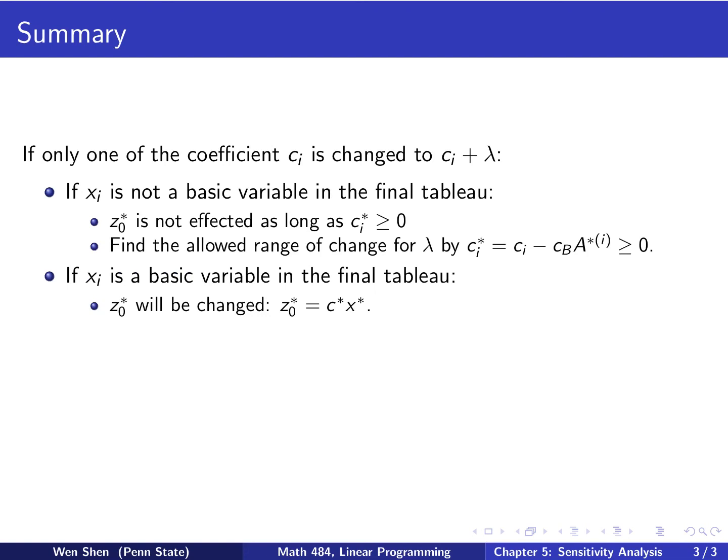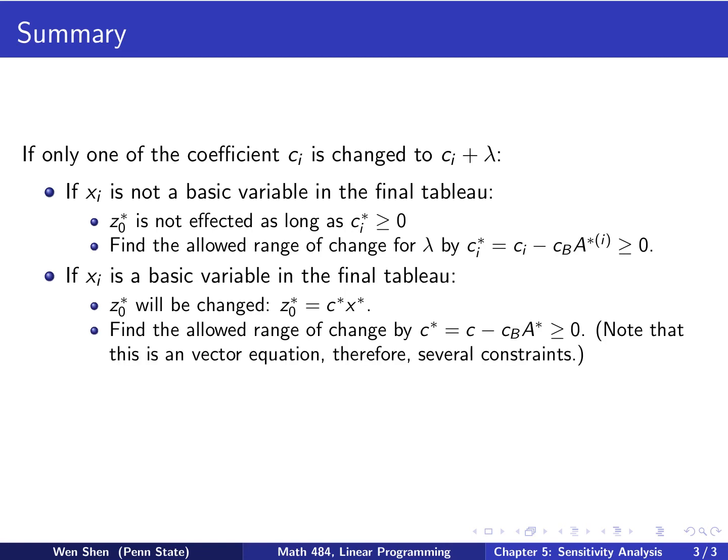And the second case here, if Xi is a basic variable in the final tableau, then there's a different procedure. Then we know the optimal value will be changed, and the optimal value will be C star times X star. And then how to find C star? Well, we also would require C star to be positive, non-negative, for this to remain optimal. So we can find the allowed range of change by C star, again, computed by this expression to be bigger than zero. From the example, we know that we have to pay attention that here we actually have a system of inequalities. There are several constraints that occur here, and they all need to be satisfied. You need to find the intersection of all these inequalities.